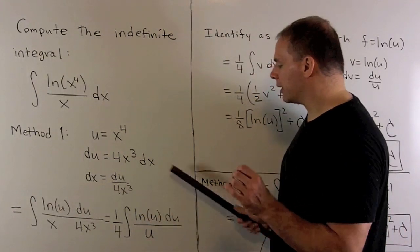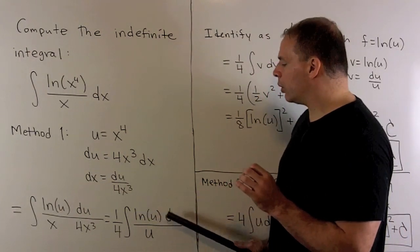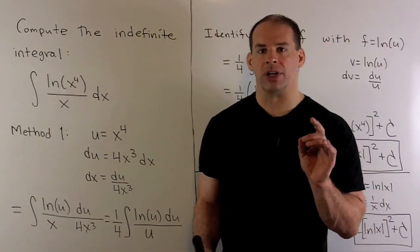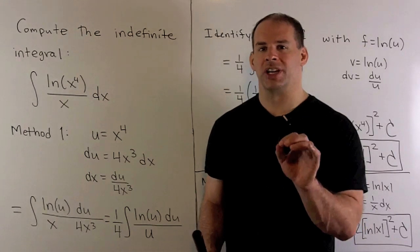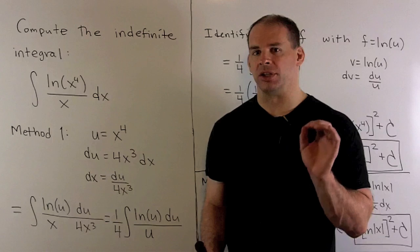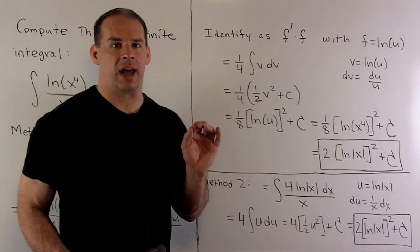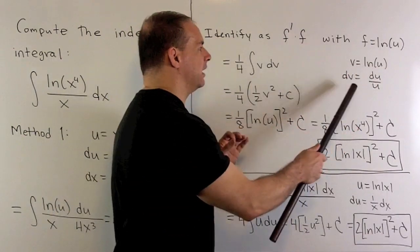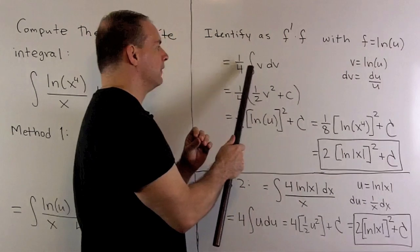So now everything's in terms of u. We'll have natural log of u du over u, and then we note it's going to be a special form for integration by substitution — a function times its derivative. The derivative of natural log of u with respect to u is 1 over u. So I let v be equal to natural log of u, dv is du over u, and this subs right in to give us v dv.